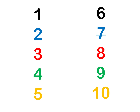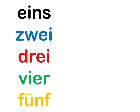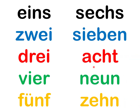Let's look at them all written out and say these all together. Ready? Begin. Eins, zwei, drei, vier, fünf, sechs, sieben, acht, neun, and zehn.